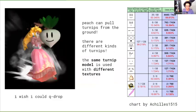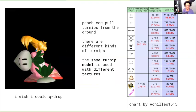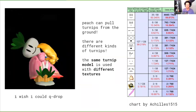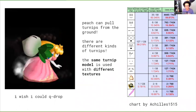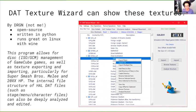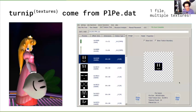Just a little bit of introduction to turnips: Peach is the player, I like to play Peach. There are different kinds of turnips and Peach can just kind of pull them from the ground, but they all use the same 3D model, just different textures. We have a tool called DAT Texture Wizard that I didn't write that can show you these textures. It's open source, written in Python, and it runs great on Linux. It can open up the ISO and show you the particular assets inside. If you look for the turnip textures, we see that they come from a file called plpe.dat.